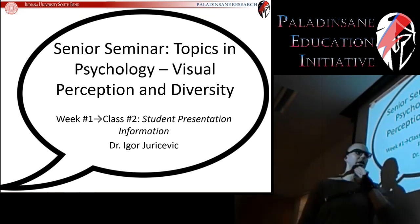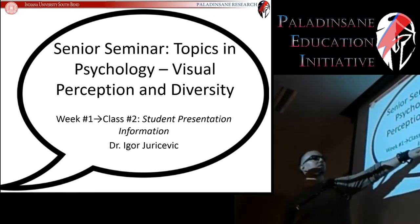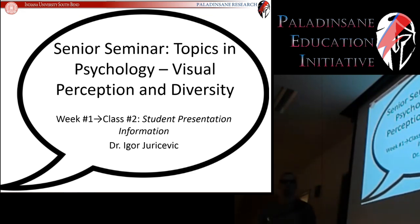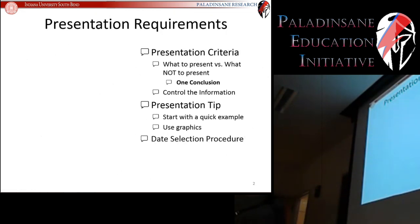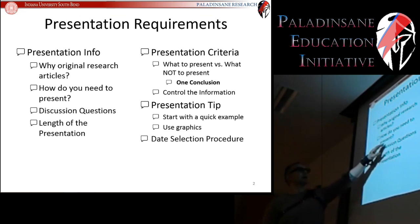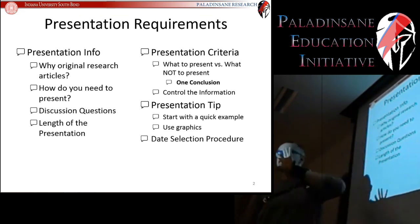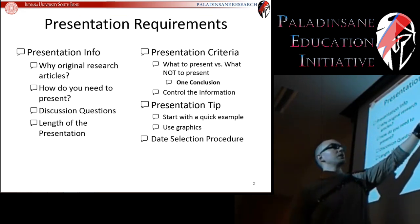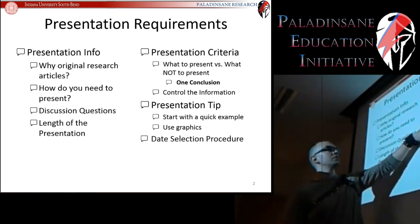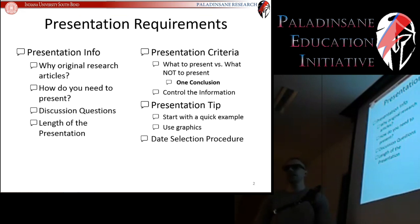What we're going to turn to now to end today's class is the information about what I expect for these presentations. We're going to look at: why are we doing original articles; how do you need to present discussion questions; presentation criteria covering what to present, what not to present, the idea of one conclusion, how to control information; some presentation tips; and the date selection procedure.